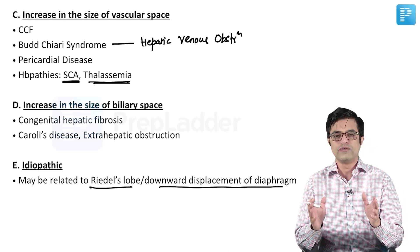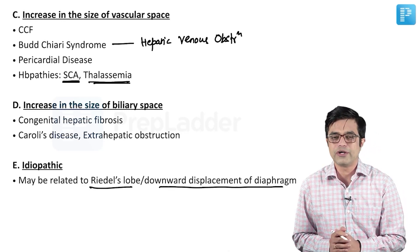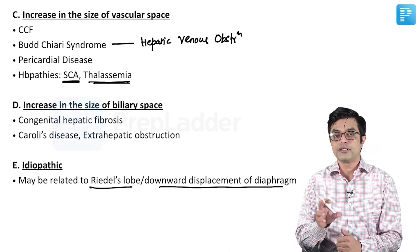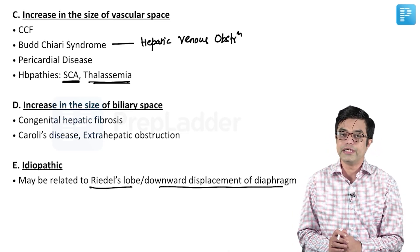There are also idiopathic reasons related to downward displacement of the diaphragm. These are the overall causes of hepatomegaly to remember, based on the table given in Nelson.